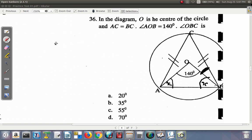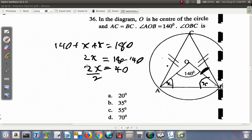Call this X and this X. So 140 plus X plus X equals 180. That's 140 plus 2X equals 180. If you subtract 140 from both sides, 2X equals 40 degrees. Divide by 2, X equals 20 degrees. So this is 20 and this is 20.